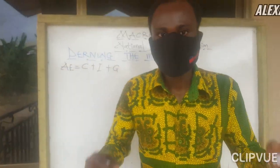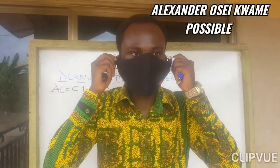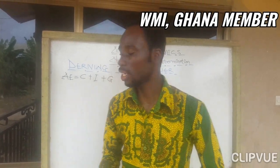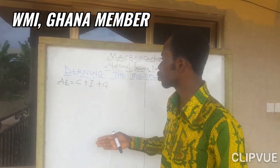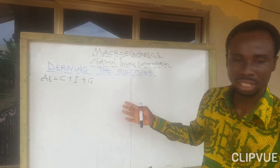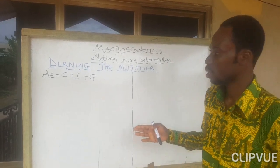My name is Alexander Osei from Ghana. Basically today we are going to learn how to derive the multiplier.